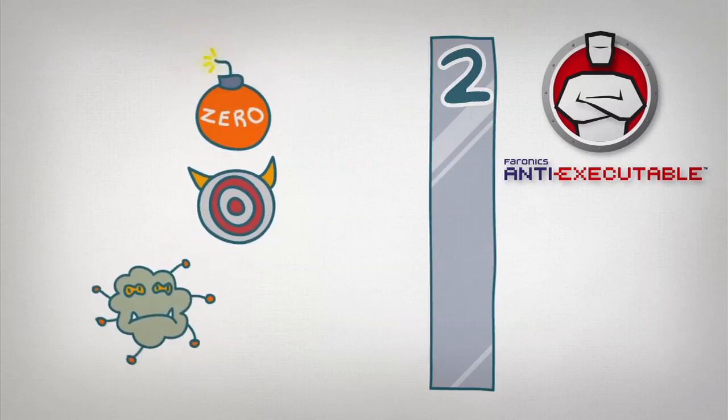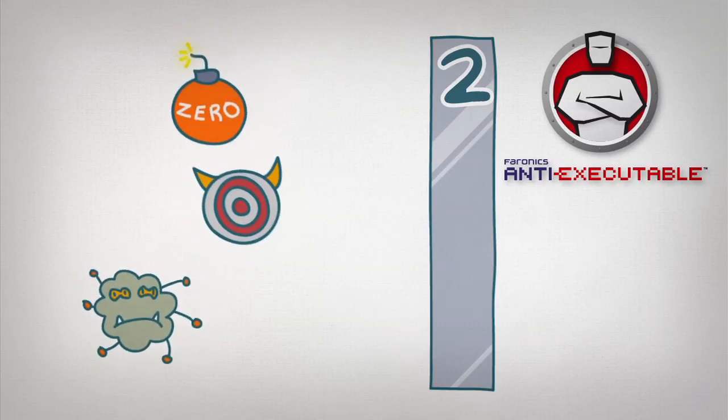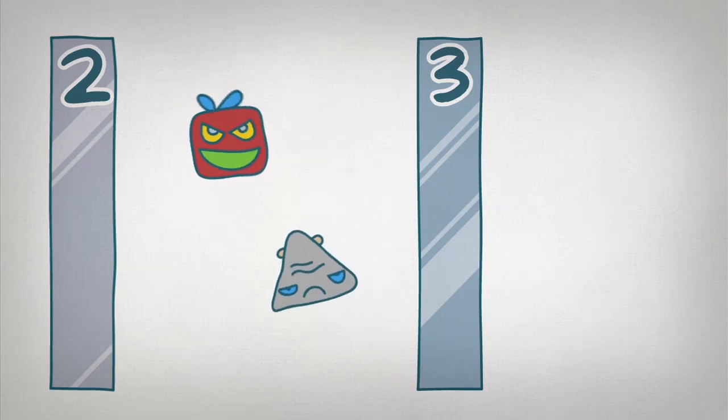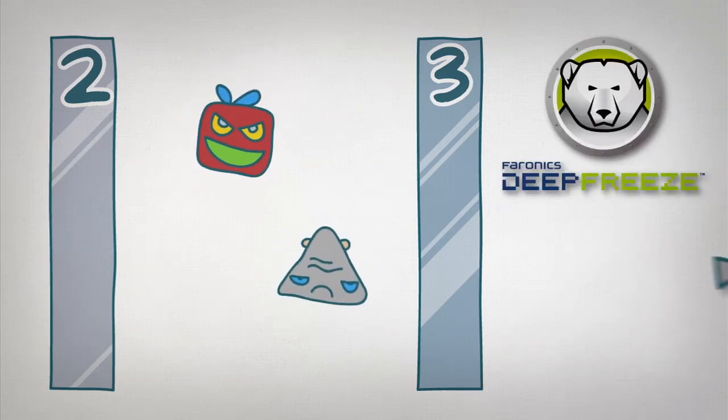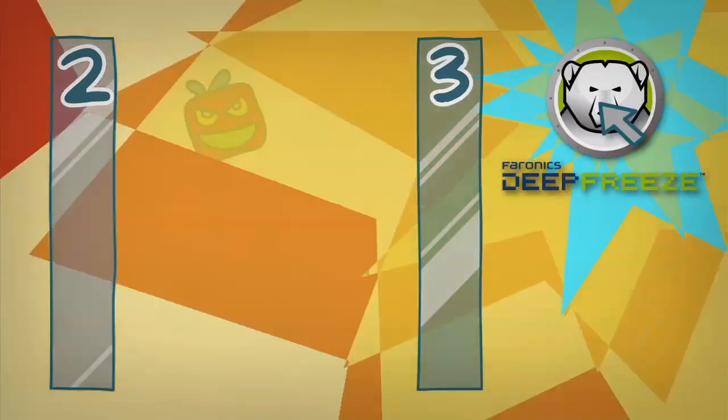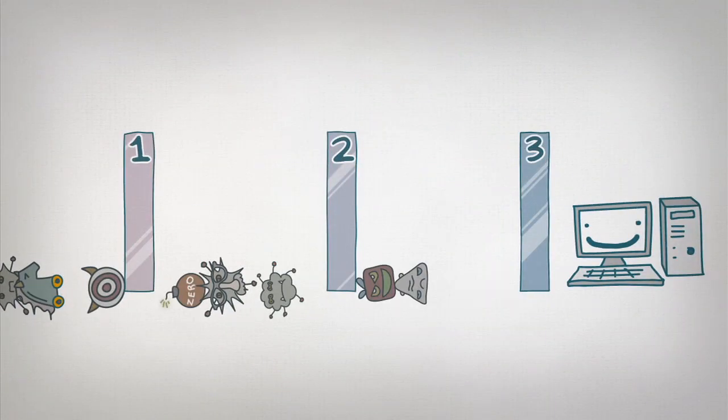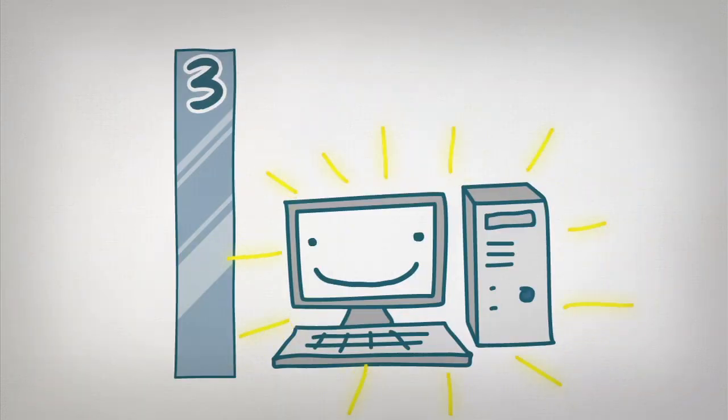And if any attack still makes it through the first two layers, say hello to Layer 3. Pharonics Deep Freeze. Deep Freeze is basically a powerful reset button. Just press it and Deep Freeze will destroy any bad guy left for good forever and restore your computer back to normal in a matter of seconds.